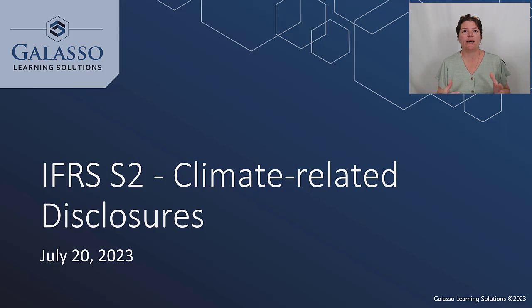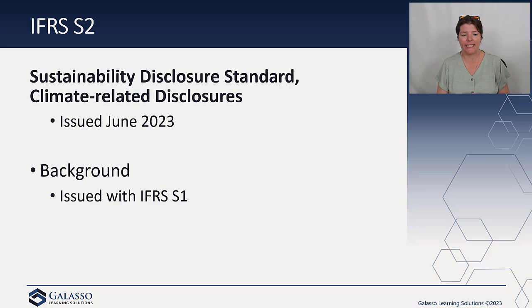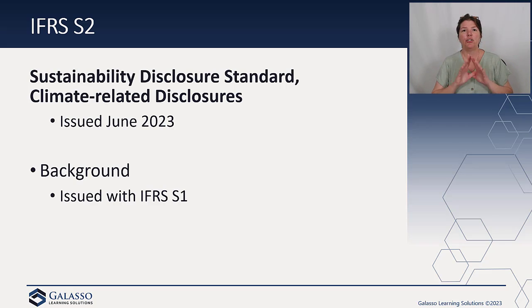This is really only applicable if you're going to indicate that you are complying with the climate-related disclosures or the IFRS sustainability disclosures. S1 is the overall framework, and issued on the exact same day was IFRS S2, which is a sustainability disclosure standard — but this time a very specific disclosure: climate-related disclosures. S1 was the overall framework; S2 is more specific about how the overall objectives apply to climate-related disclosures.